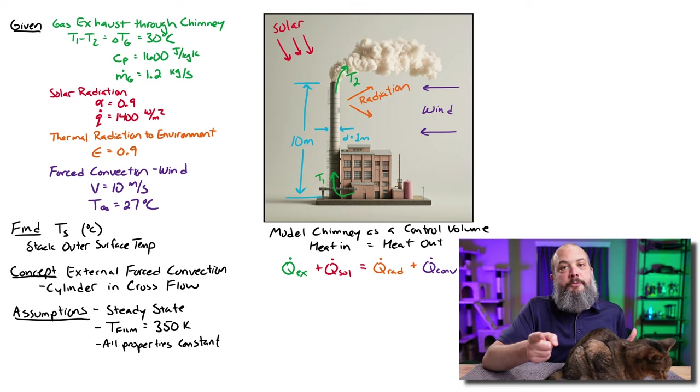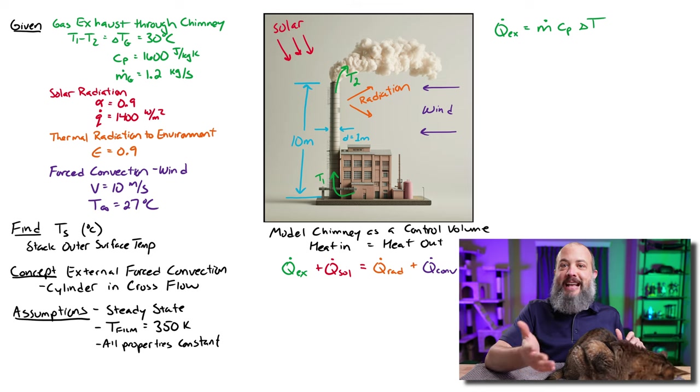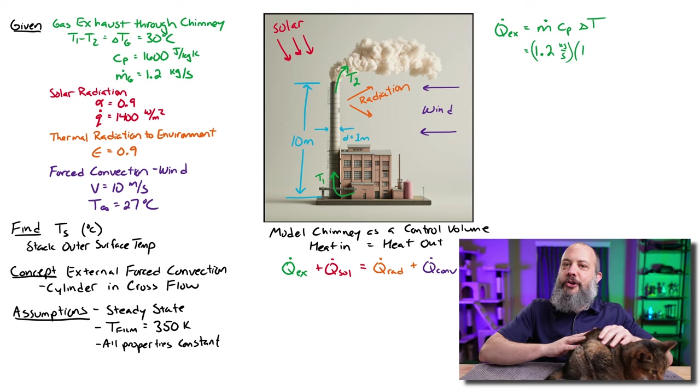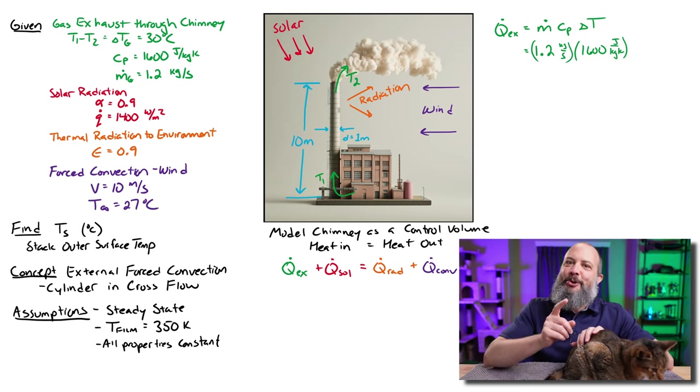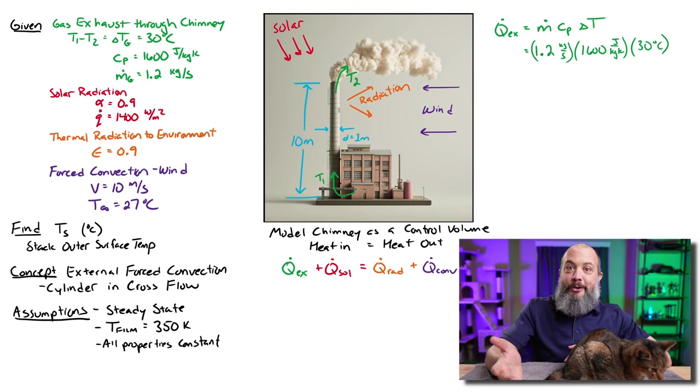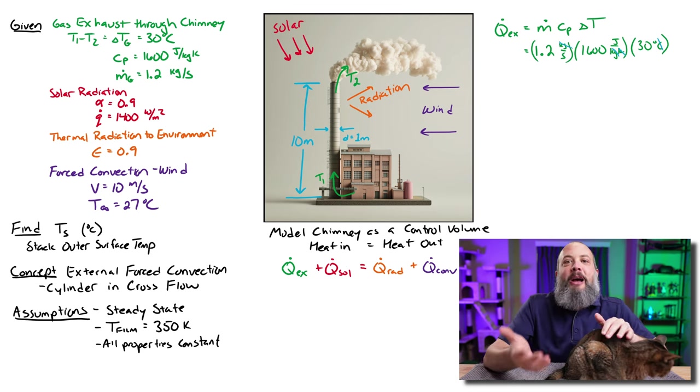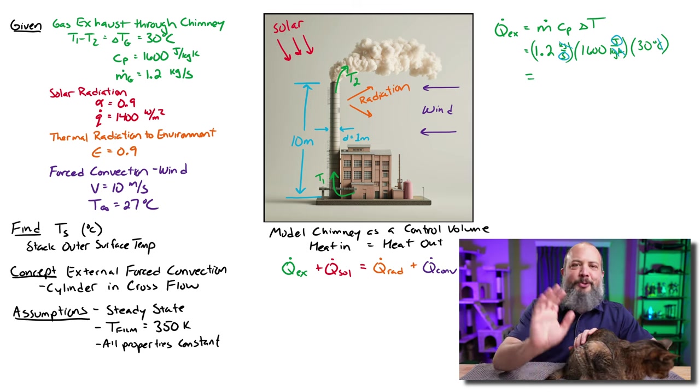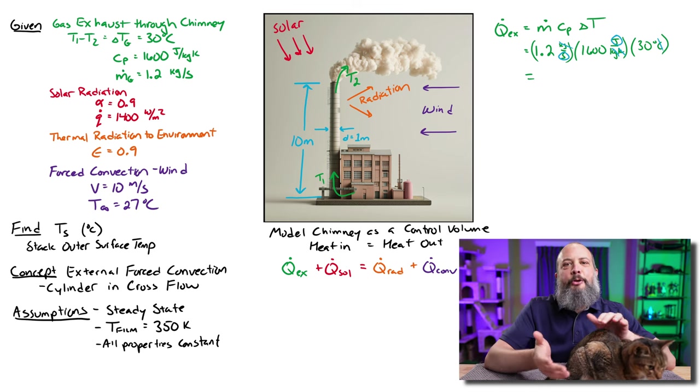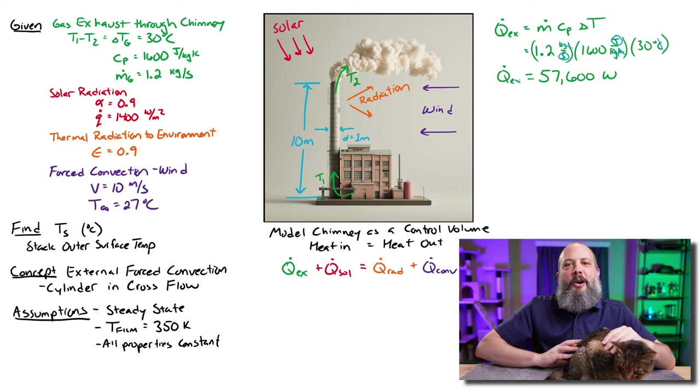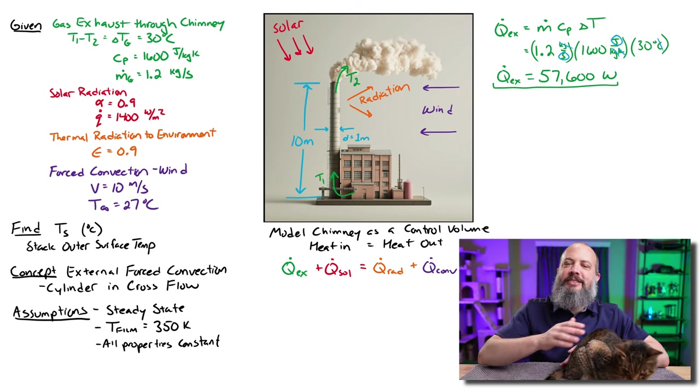Easy parts first, we already have everything we need for the green exhaust gases, we can find the energy as m dot CP delta T. We don't need to model this as an internal forced convection problem because we already know the change in temperature. If we know the change in temperature and the flow rate, we can figure out the amount of energy without having to actually do internal forced convection and finding H and all that. So this is just kind of a thermodynamics review. 57,600 watts is the energy lost by the exhaust gases as they flow through the chimney.